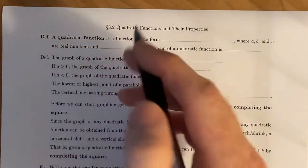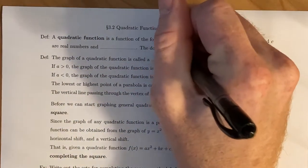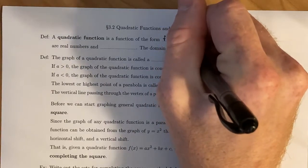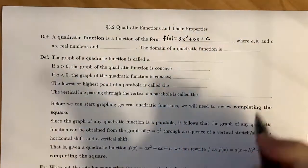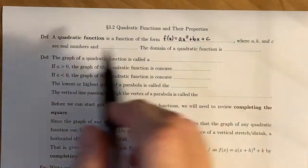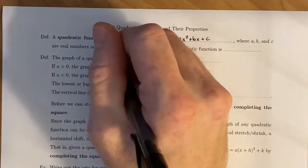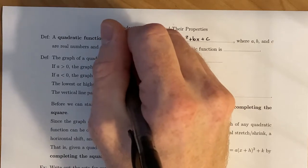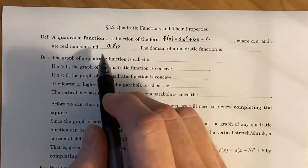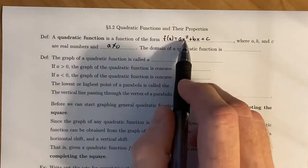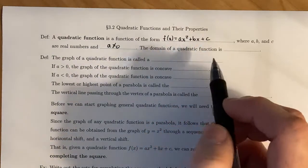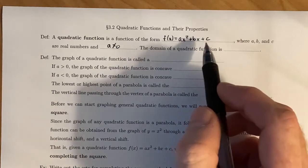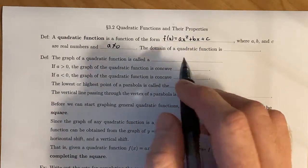To begin, a quadratic function is a function of the form f(x) = ax² + bx + c, where a, b, and c are all real numbers, and we make the constraint that a is not equal to zero. Because if a was equal to zero, you lose the x² term and you're left with only bx + c, which is a linear function, something that we studied in section 3.1.